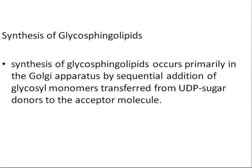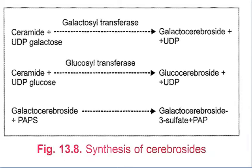The synthesis of glycosphingolipids occurs primarily in the Golgi apparatus by the sequential addition of glycosyl monomers transferred from UDP sugar donors to the acceptor molecules. For example, ceramide plus UDP-galactose forms galactocerebrosides plus UDP; ceramide plus UDP-glucose, involving glycosyl transferase, forms glucocerebrosides plus UDP.